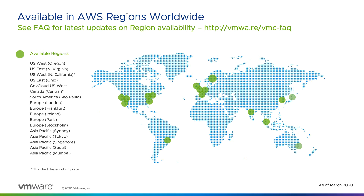VMware Cloud on AWS is available in a growing number of global AWS regions. For the latest list of supported regions, please see the FAQ. When selecting a region, consider compliance requirements, data sovereignty, or technical aspects like proximity to your customers or location of other business applications that may be sensitive to latency.